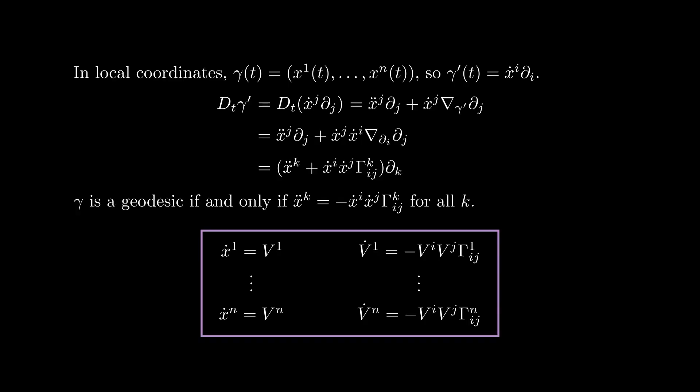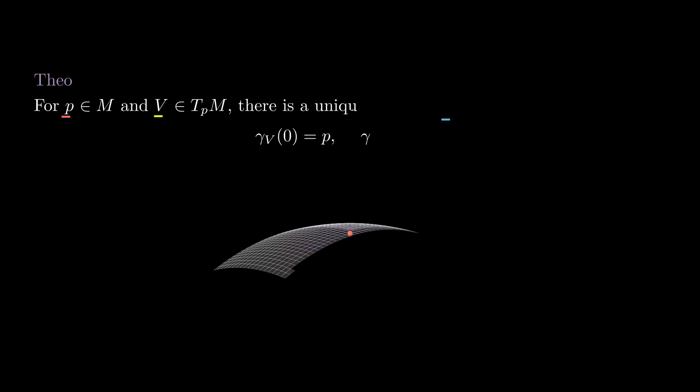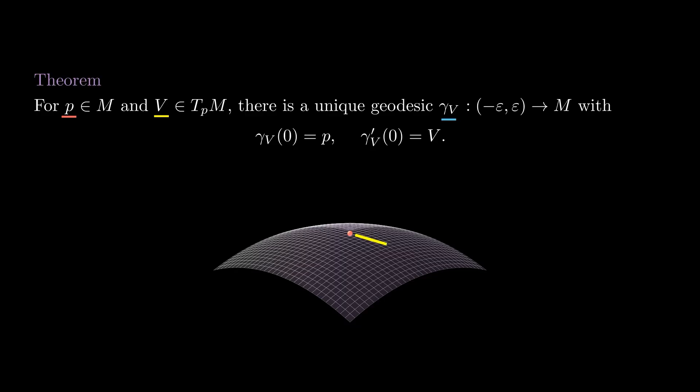Since the Christoffel symbols are smooth, for any initial condition there is a unique solution for at least a short amount of time. This means that for any initial position p and any initial velocity v in TpM, there is a unique geodesic we call gamma v that passes through p and has velocity v at time zero. The domain of this geodesic can be potentially very small, but we will worry about that in a later lesson. For now, we will just use the fact that it exists and it is unique.